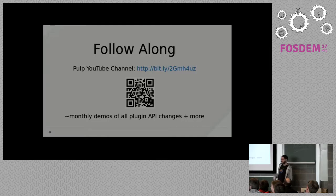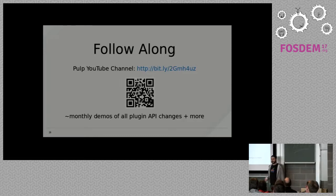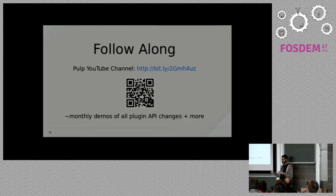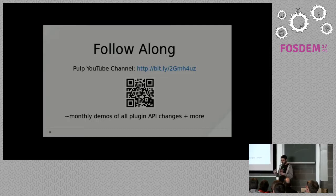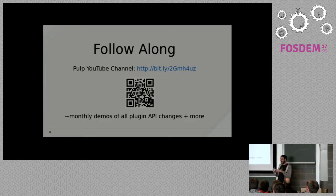Question: When you upload a bunch of files, is there an atomic guarantee for the version? The upload API works by first uploading artifacts into Pulp via the artifact API, then converting them into content units before adding to any repositories. Once you've created those content units, you can do a bulk add to a repository to create a new version. If there's a problem adding any content units, that version will not be created and you can try again.